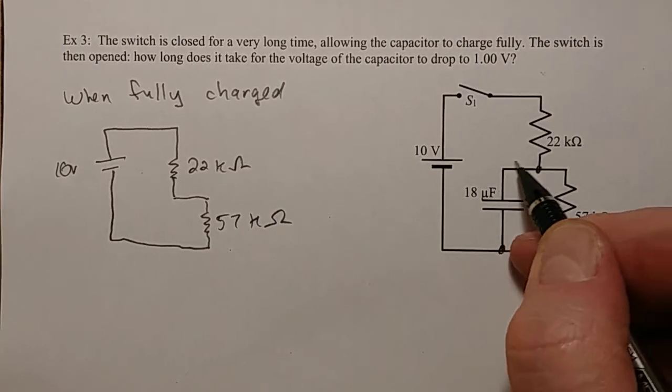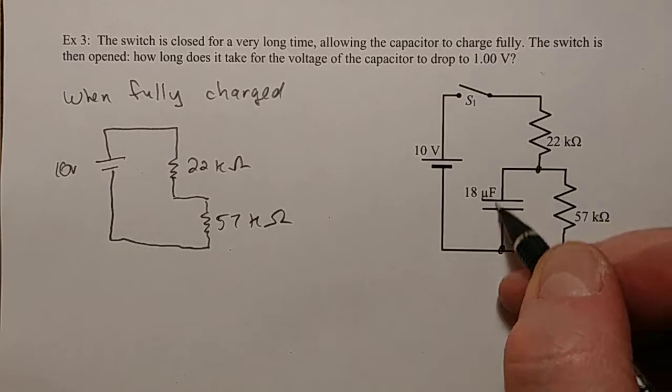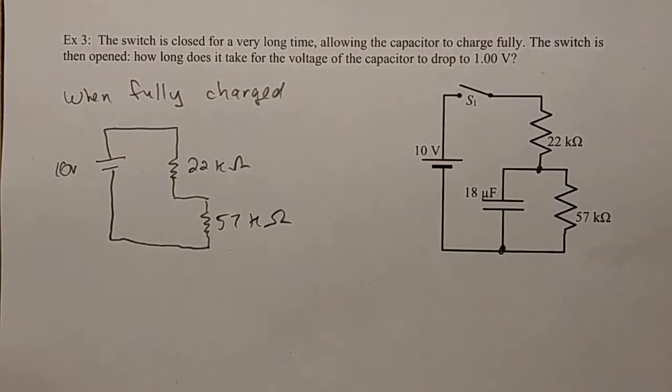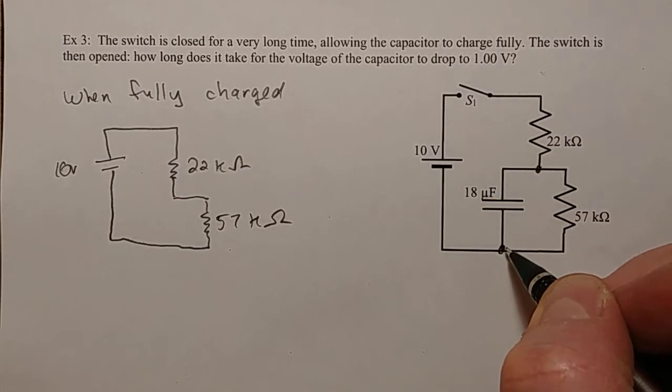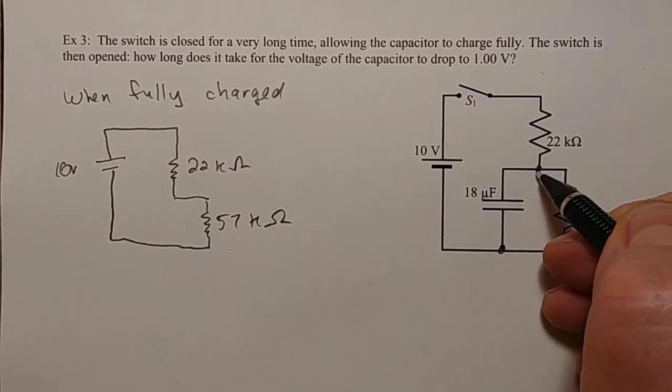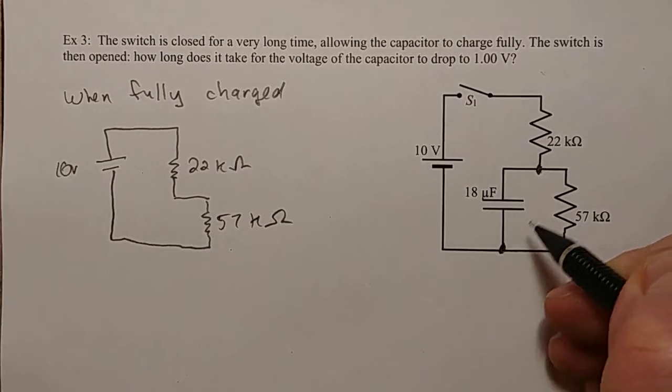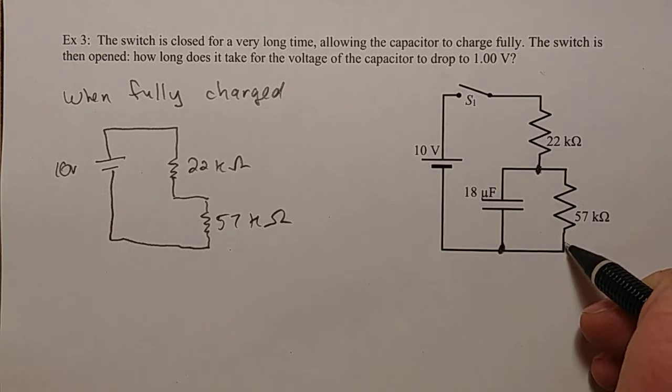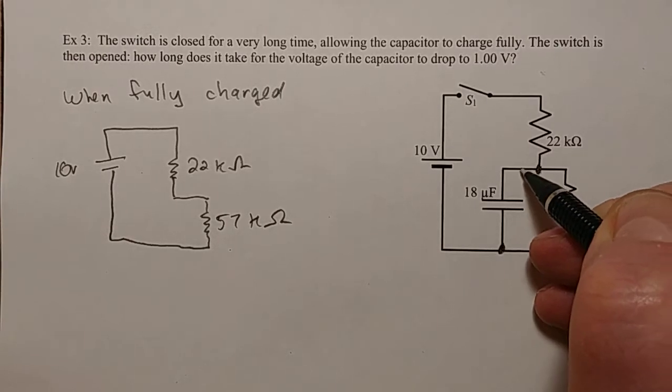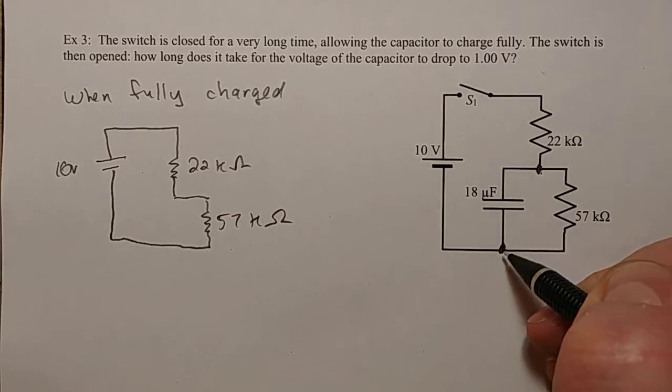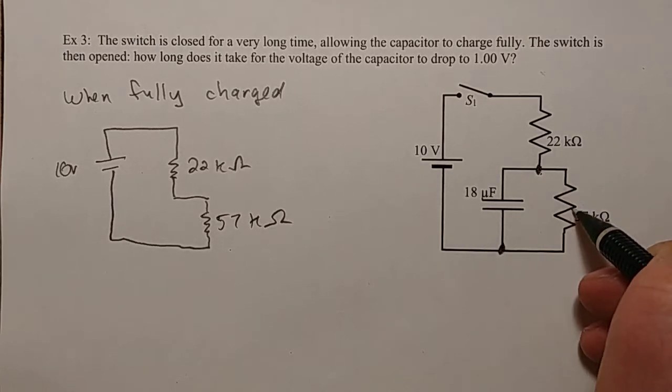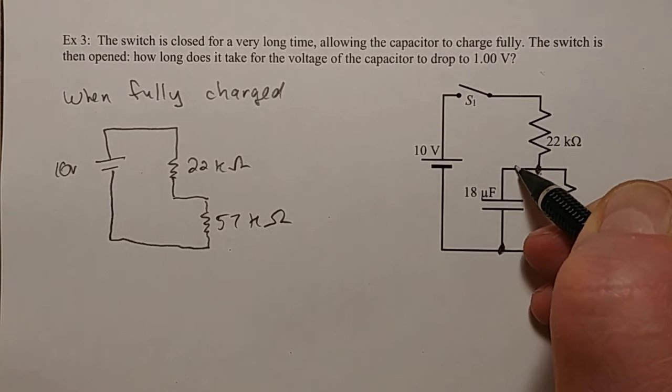And what about this branch? Well, this branch doesn't matter because it's like an open switch. Nothing can go through there anymore when it's fully charged. Why is this interesting? Because when it's fully charged and there's no current going down here, from this node to this node, you can travel past this resistor or past this capacitor, which means the change in potential has to be the same whether you're looking at this resistor or this capacitor.